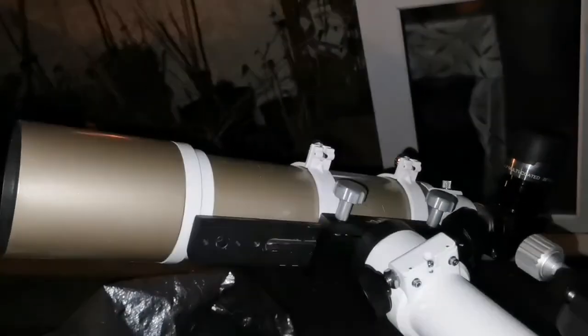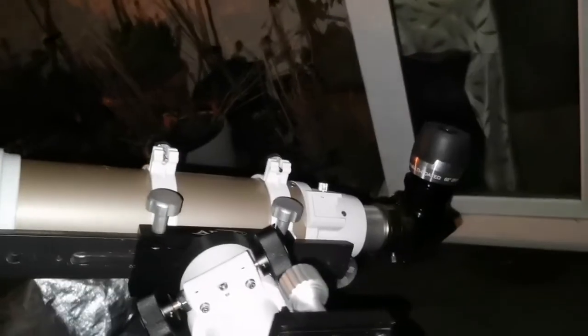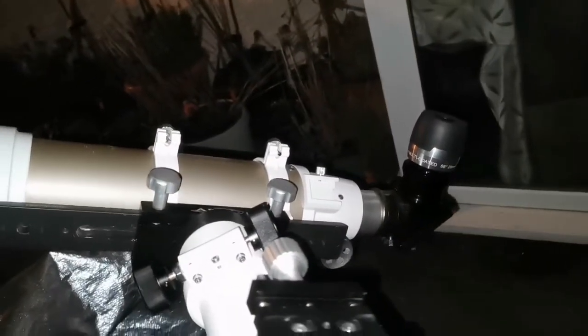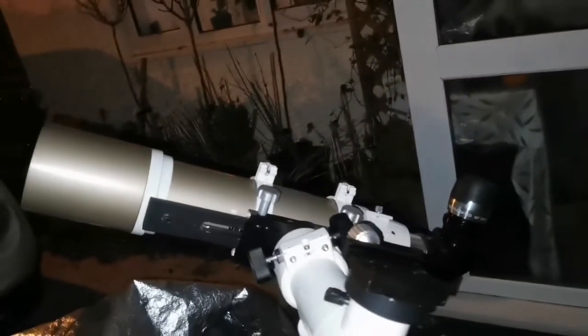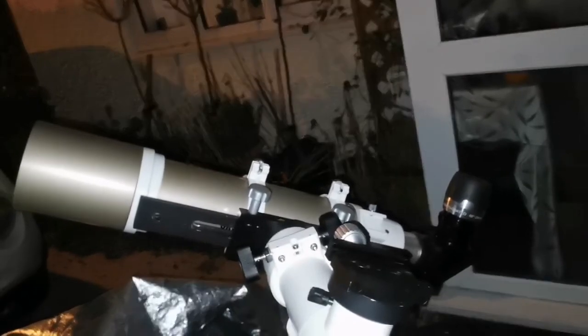ED refractors of Skywatcher are really a well-kept secret. They don't of course tell what kind of glass they're using. They say Schott glass, but the actual formula is not known. And they really punch above their weight. They're equal to many of the premium brand telescopes at a very affordable price.